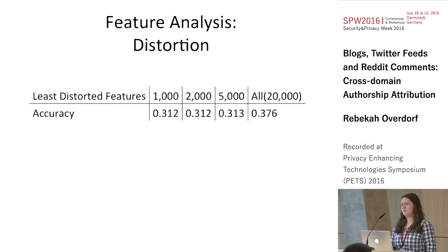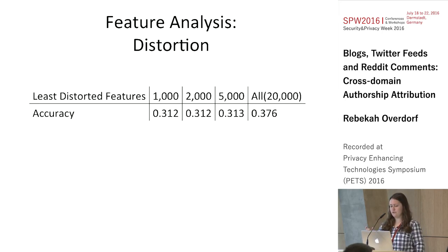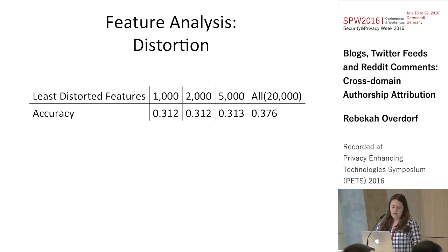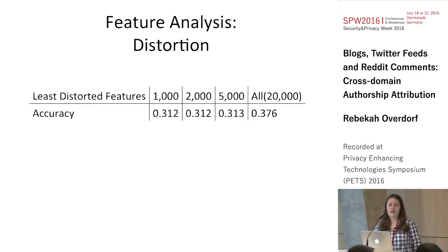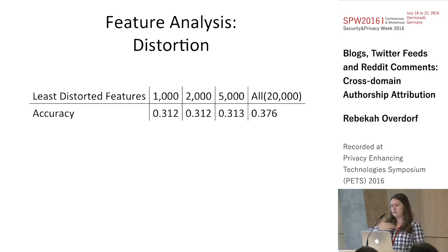Let's go back to distortion and see if it's not a feature type but a specific group of features. We took the least distorted features and kept them, and removed the most distorted features, using a dev-test split to avoid overfitting. But removing features — even the most distorted ones — doesn't improve accuracy at all; it even decreases it. While one author may change in one way across domains, another changes differently, and there seems to be no consistency in how they change.